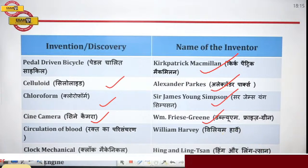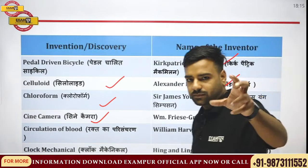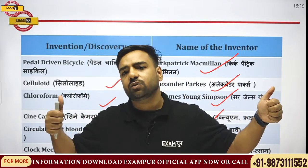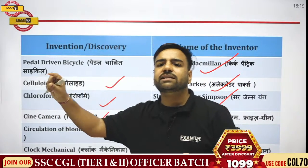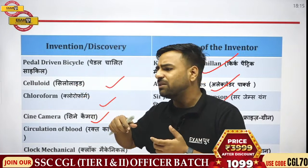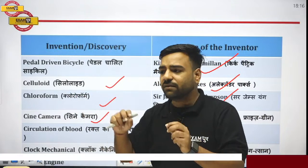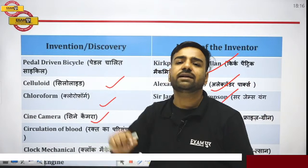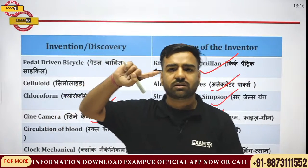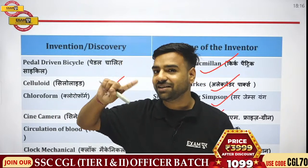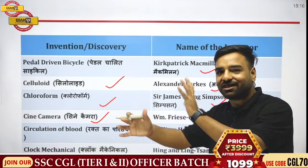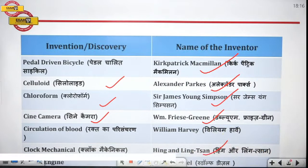Next, the mechanical clock was discovered by I-Hsing and Liang Lingzan. There is also a note on circulation: open circulatory systems have no vessel-like structures — no arteries or veins — as seen in organisms like frogs. Closed circulatory systems, like in humans, have arteries, veins, and capillaries. The trick to remember the mechanical clock: a clock goes tick-tick, which sounds like 'Hing-Ling,' helping you recall I-Hsing and Liang Lingzan.